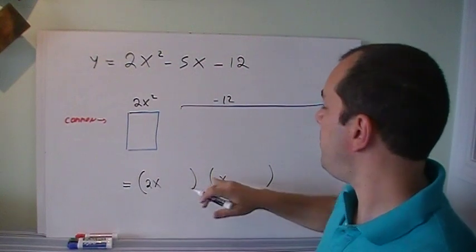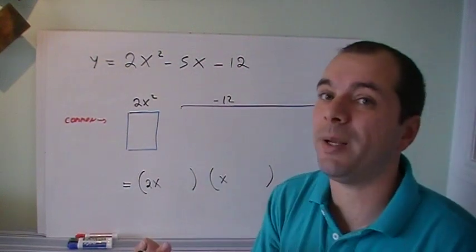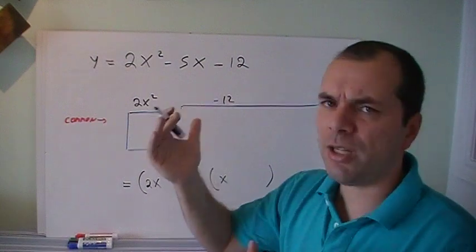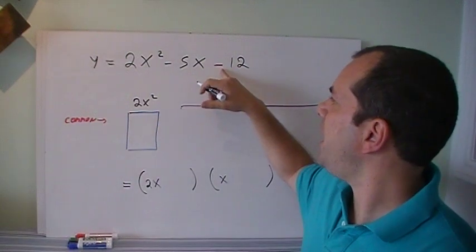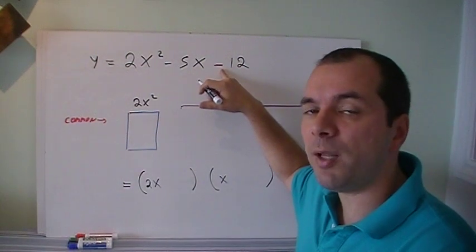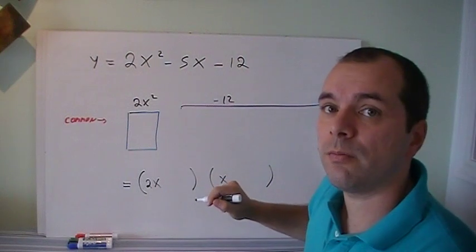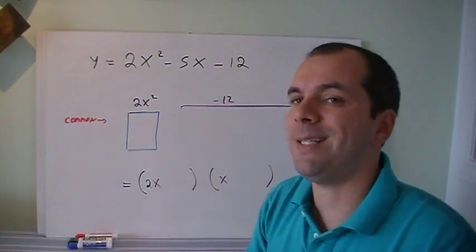Now, I know that the other two numbers are going to have to give me 12, but I don't know which they are. Let's check for signs. Well, it's a negative at the end, so I know one's going to be plus, one's going to be minus, but I don't know which one's which. Okay, follow this technique.